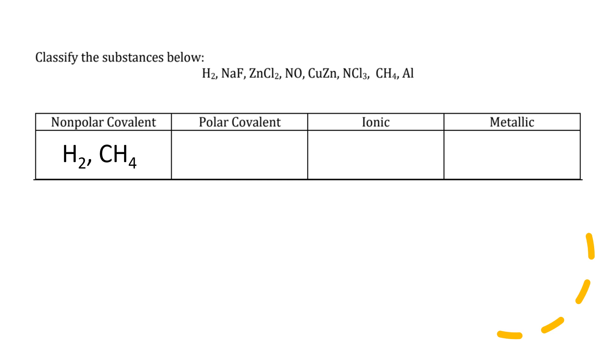Next, polar covalent, so still two nonmetals but there is a difference in polarity, meaning there may be some dipoles, negative and positive dipoles. So that means it's going to be NO and NCl3. Ionic: metal and nonmetal, so sodium fluoride and zinc chloride.